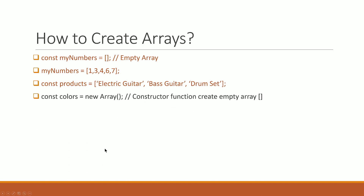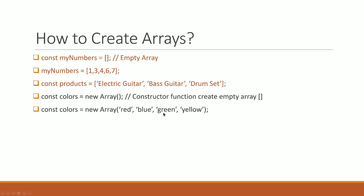The upper part is the constructor function. The new keyword is used in array construction. So the colors are the empty array created with the constructor. Now we have the colors array — these are plural nouns. New array contains red, blue, green, yellow.